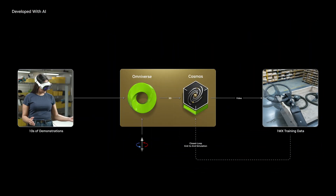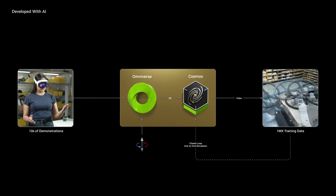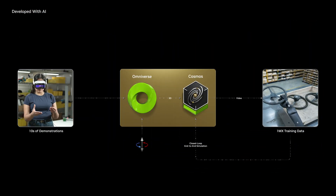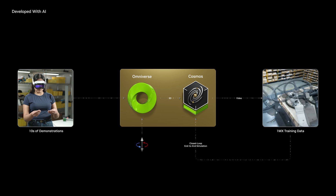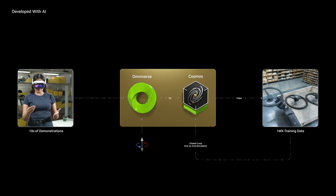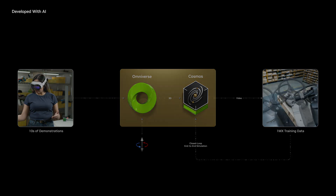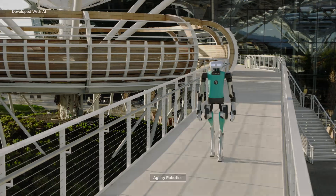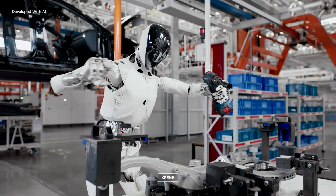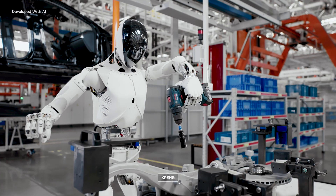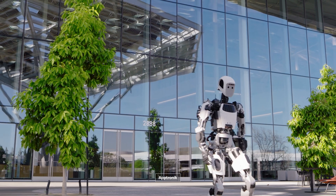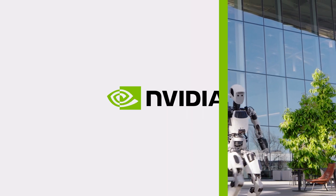Once the policy is trained, developers can perform software-in-the-loop testing and validation in Isaac Sim before deploying to the real robot. The age of general robotics is arriving, powered by NVIDIA Isaac Groot.